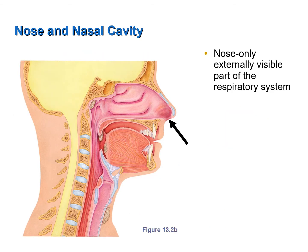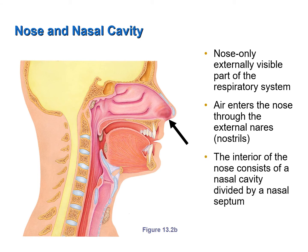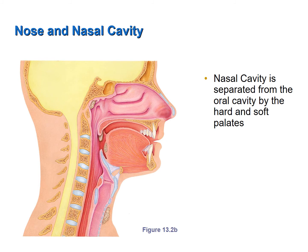The nose is the only part of the respiratory system visible externally. Air enters through the external nares or nostrils and then enters the nasal cavity. The nasal cavity is divided into right and left halves by the nasal septum, which consists of the perpendicular plate of the ethmoid bone, the vomer, and septal cartilage. The nasal cavity is separated from the oral cavity by the hard and soft palates — the hard palate is the anterior bony structure, and the soft palate is the posterior soft-tissue structure.